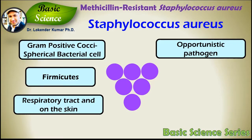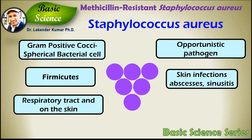Opportunistic pathogen means a pathogen which does not cause any disease in a healthy host, but when it gets an opportunity — for example, a weak immune response of the host, or during cancer where host immunity is impaired — it can cause infection. Such pathogens are known as opportunistic pathogens.